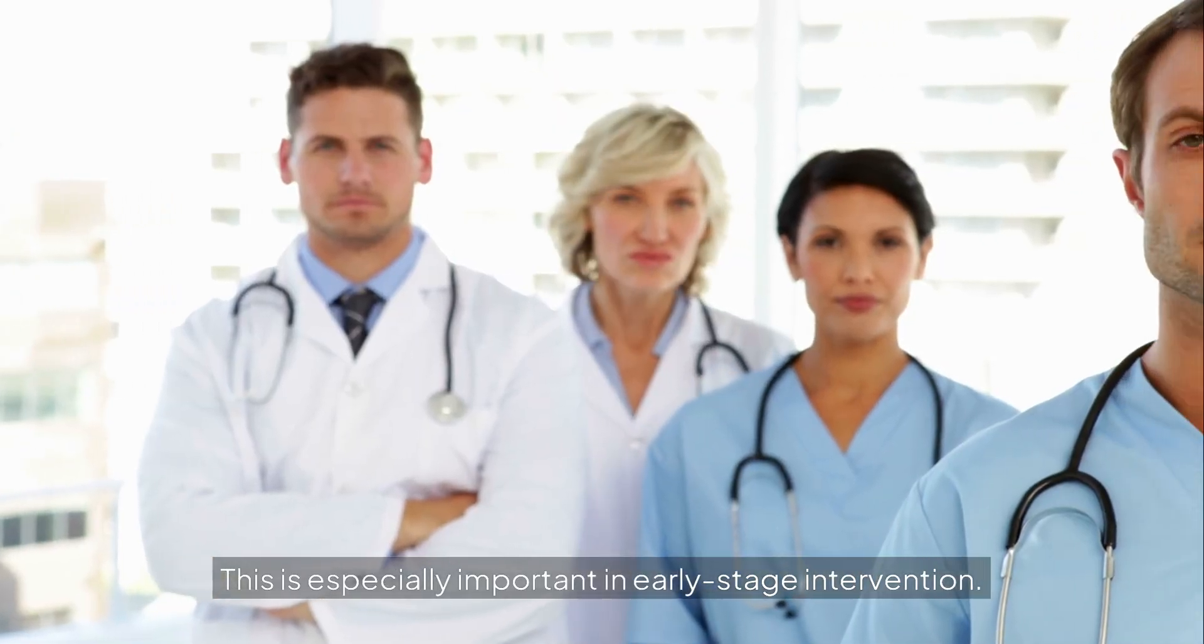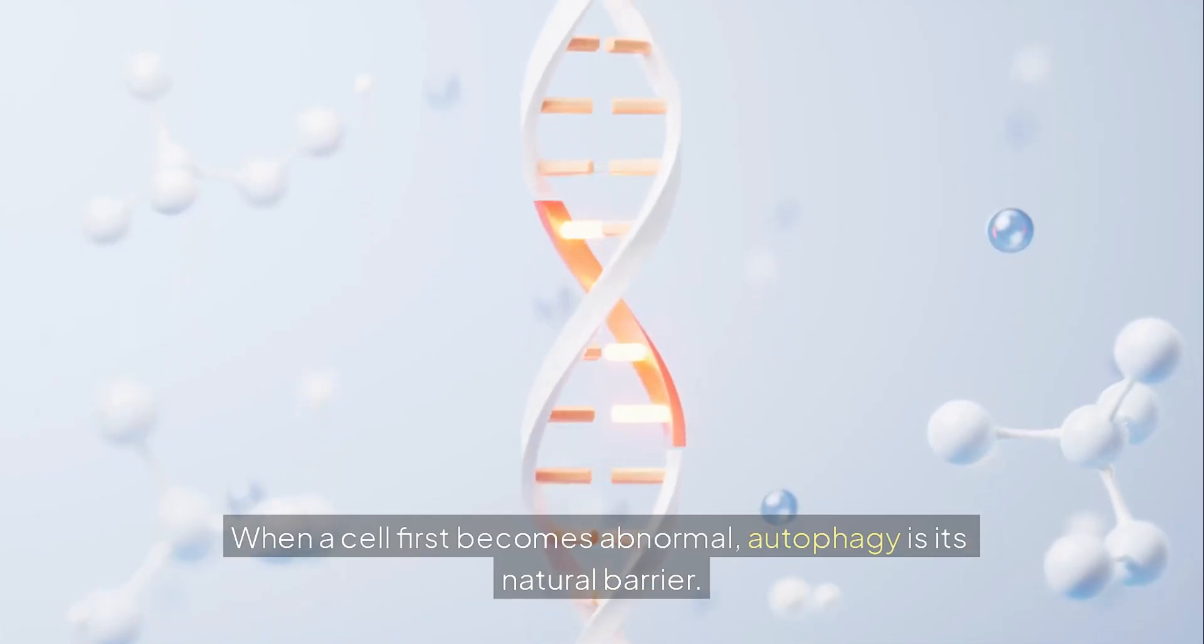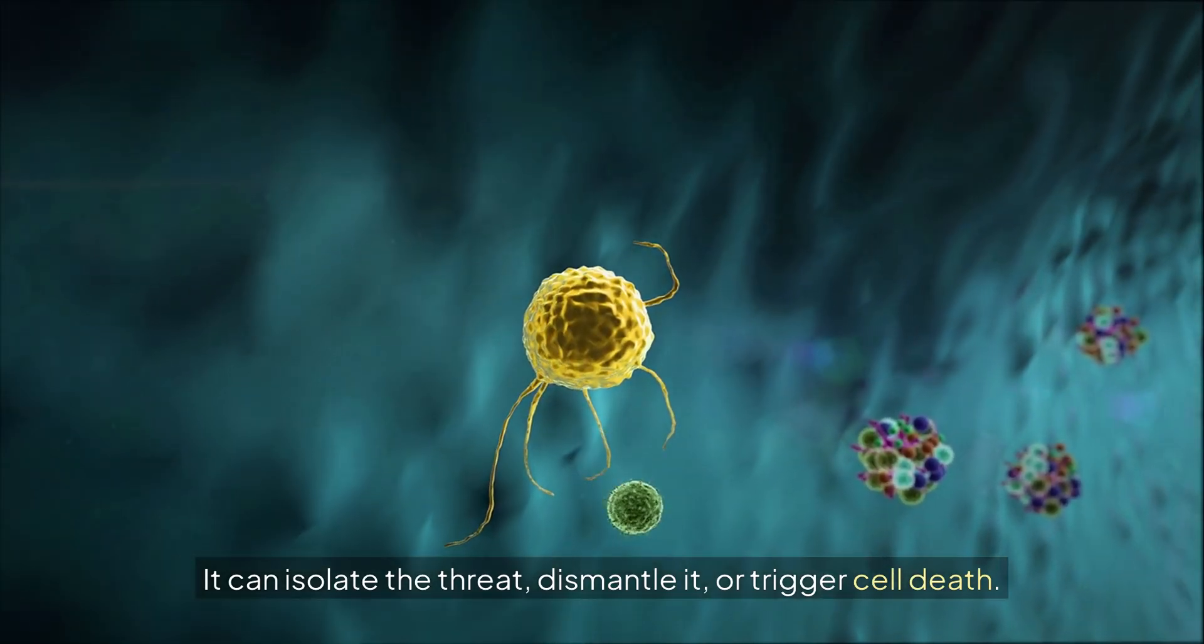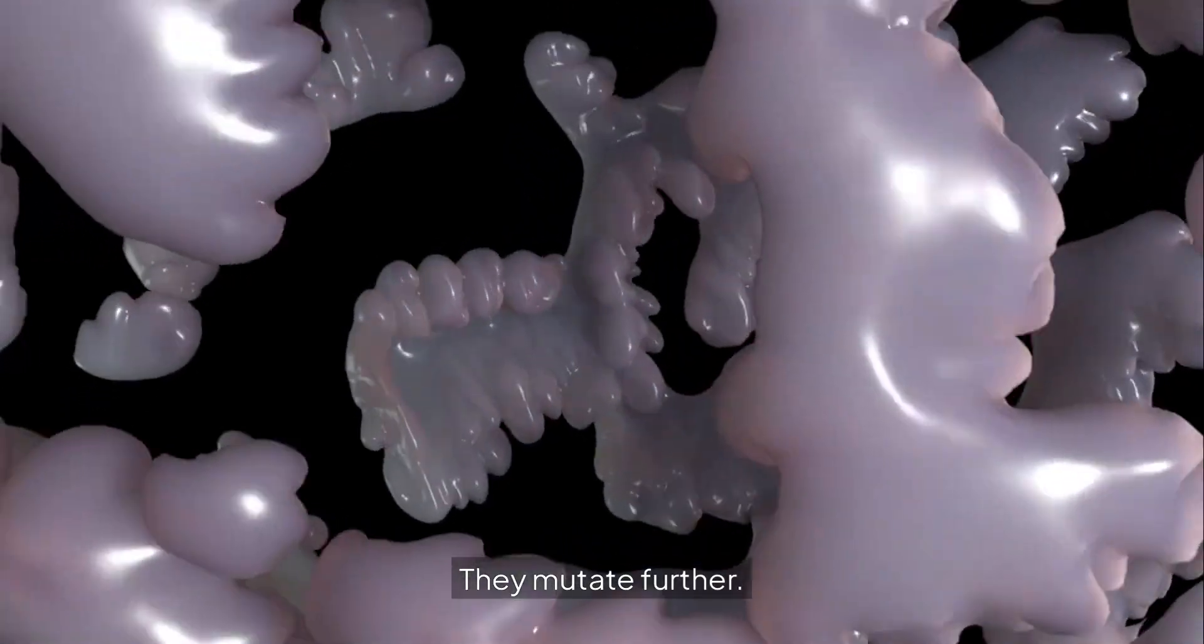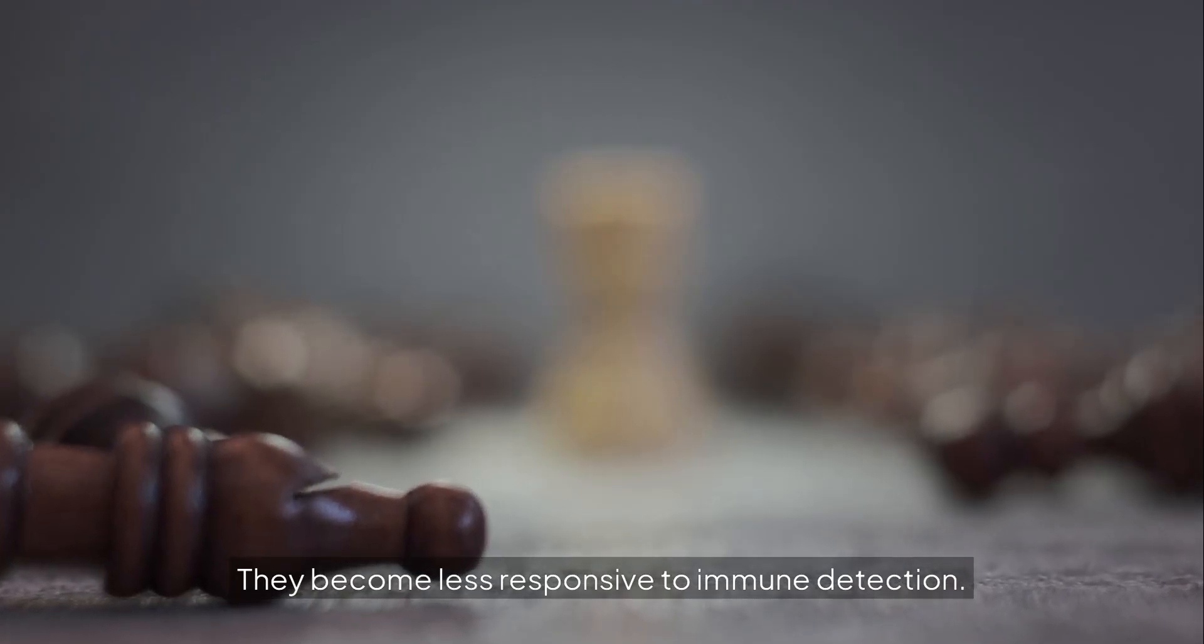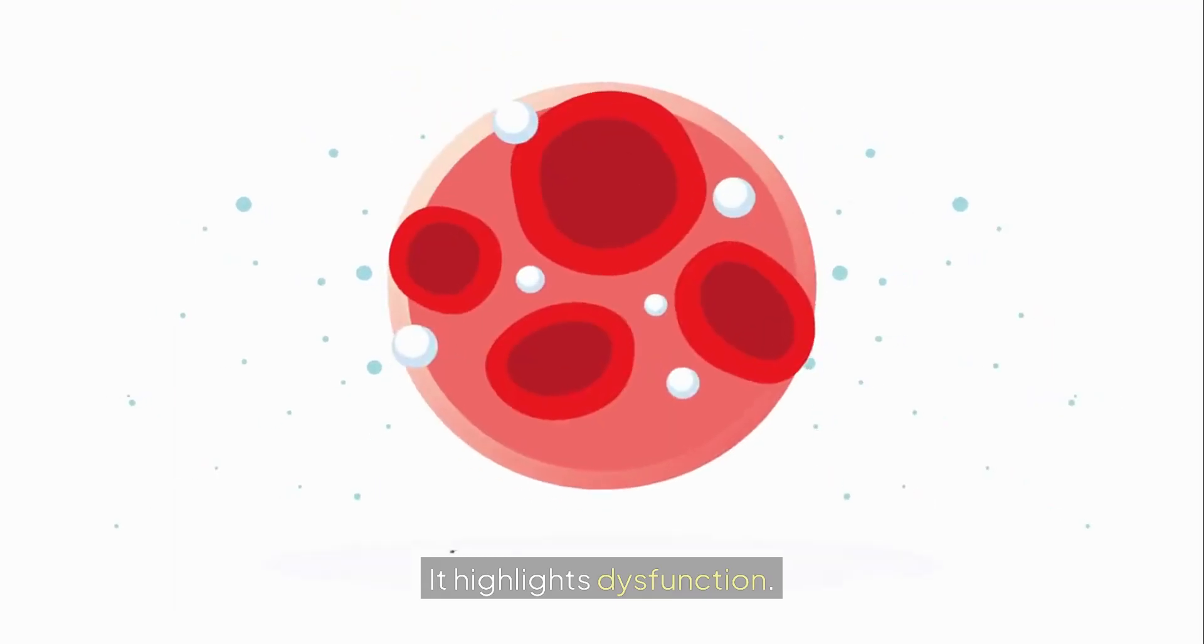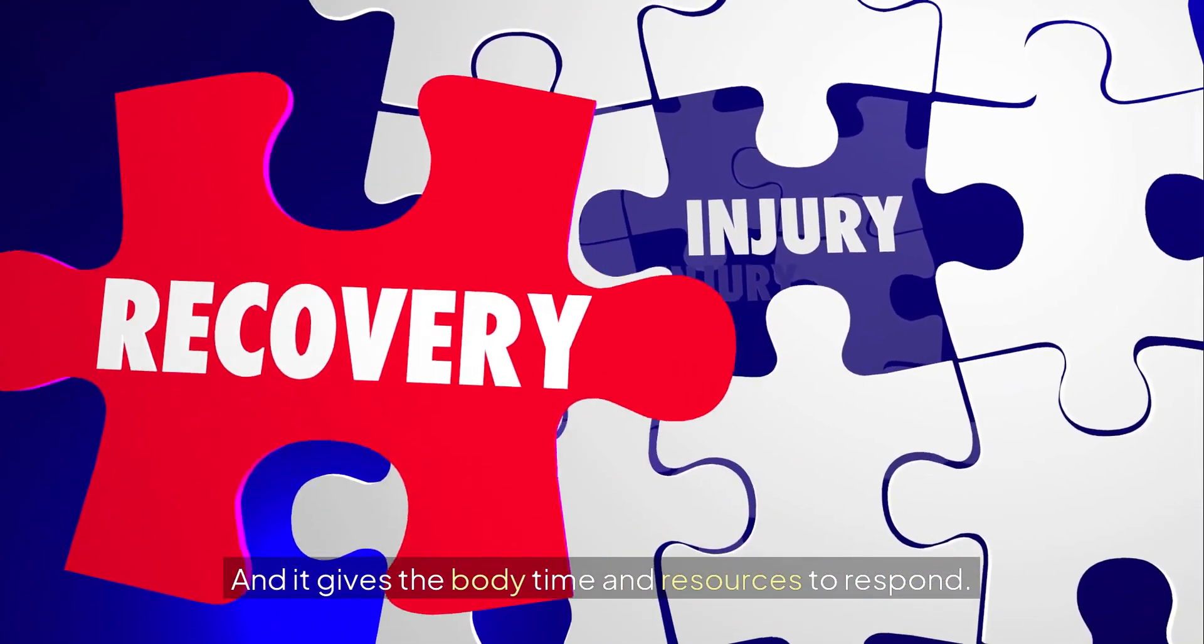This is especially important in early-stage intervention. When a cell first becomes abnormal, autophagy is its natural barrier. It can isolate the threat, dismantle it, or trigger cell death. Without autophagy, these cells persist. They mutate further. They become less responsive to immune detection. Fasting restores that early intervention system. It lowers the noise in the cellular environment. It highlights dysfunction, and it gives the body time and resources to respond.